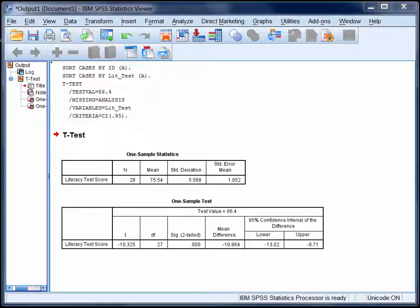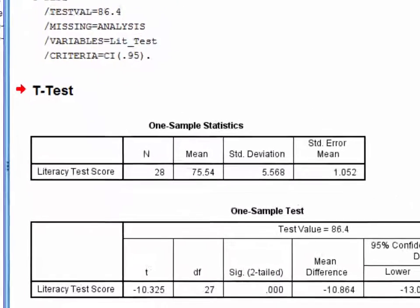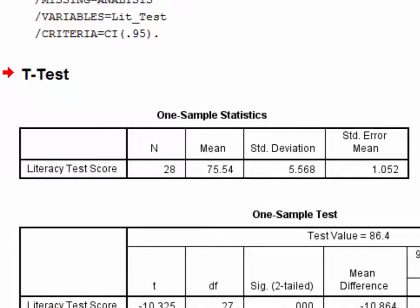When you run a one-sample t-test in SPSS, you get two tables of output. The first table provides descriptive statistics for the sample.